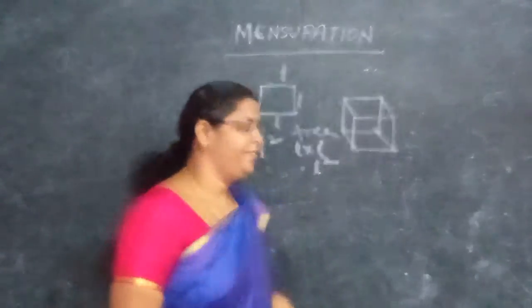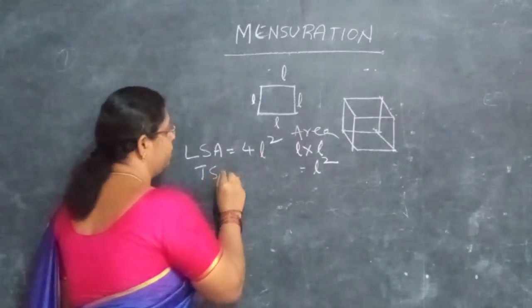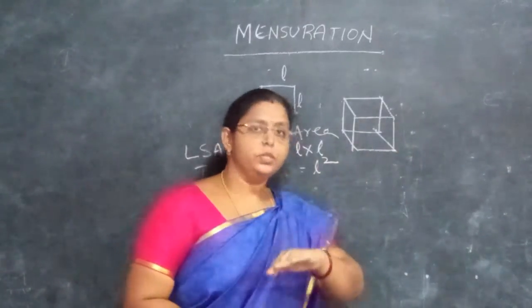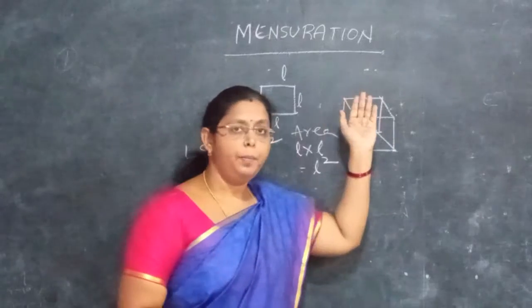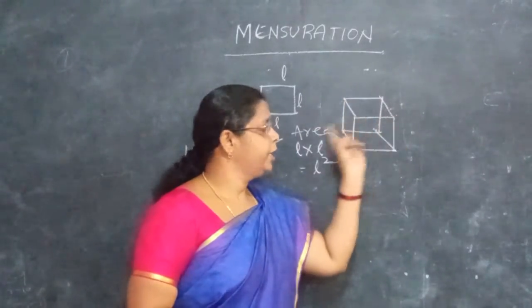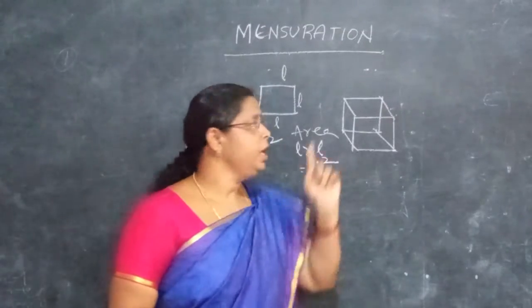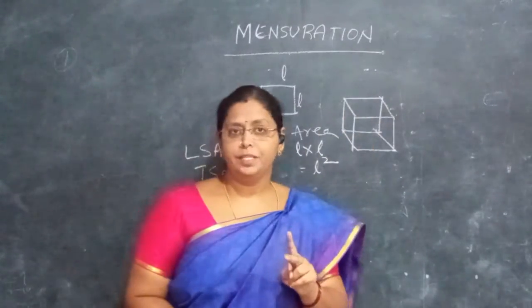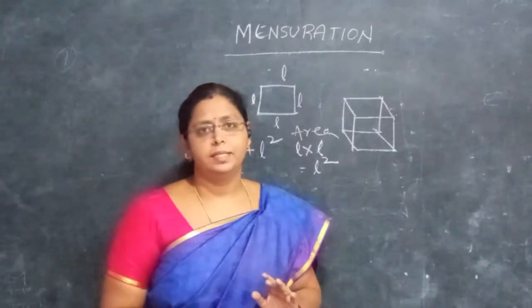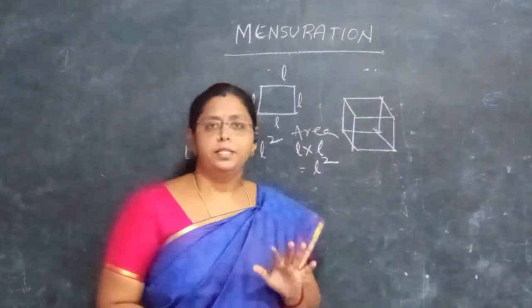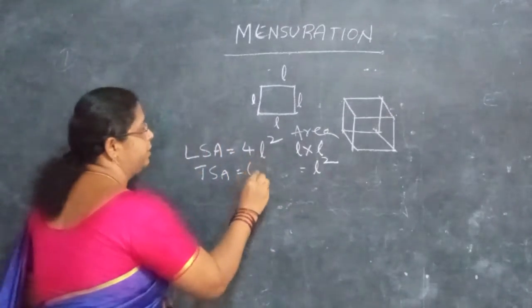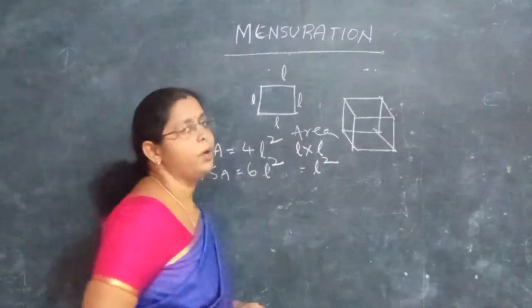Next, total surface area. Total surface area: we have 4 sides plus the top and bottom pieces — that gives us 6 faces total. So, total surface area equals 6L squared.